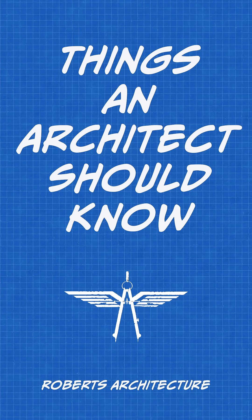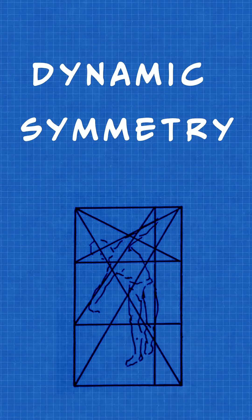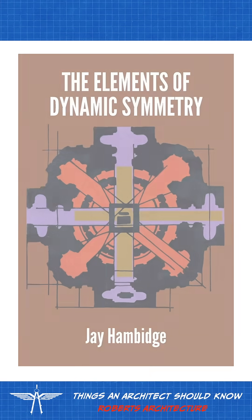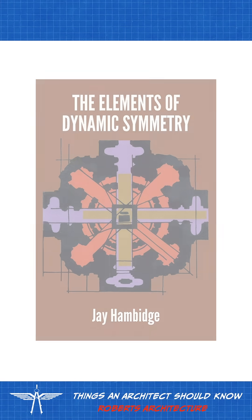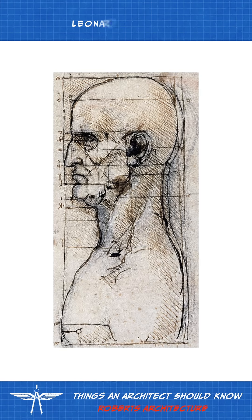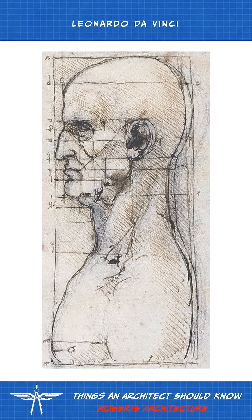Things an Architect Should Know: Dynamic Symmetry. Dynamic symmetry is the use of axes, grids, and controlling lines to create proportions or symmetries.